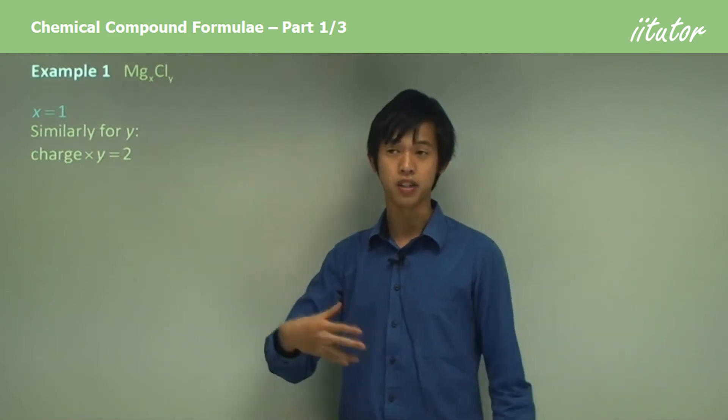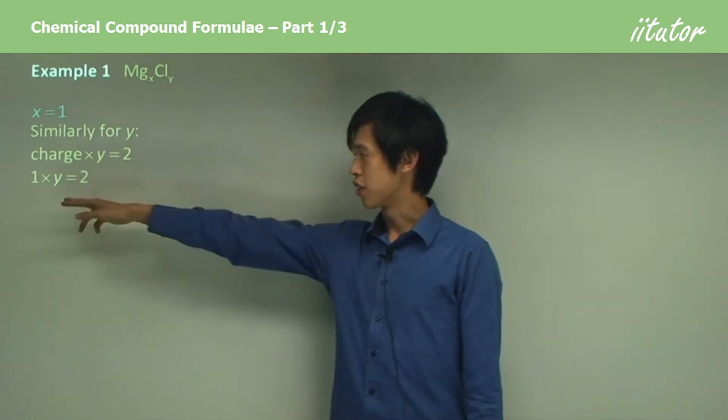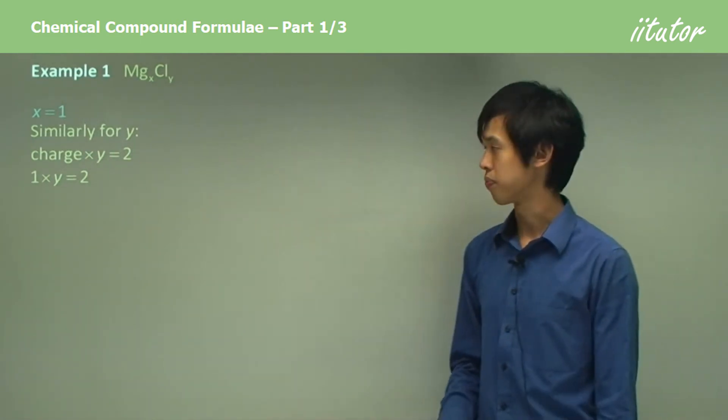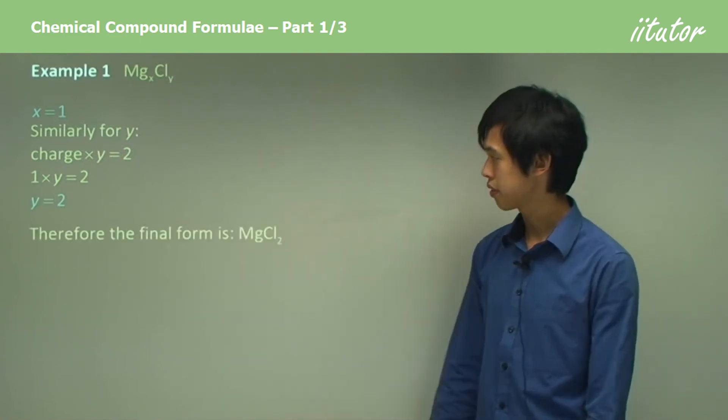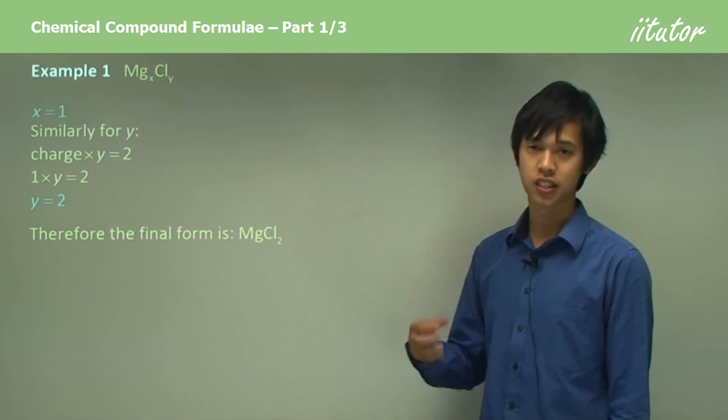Similarly for y, you've got the charge of the chlorine ion times however many chlorine ions per molecule to give you two. So you've got the charge of one, then to get to two you need y to be equal to two. So y equals two. Therefore the final form is magnesium one, chlorine two, so MgCl2.